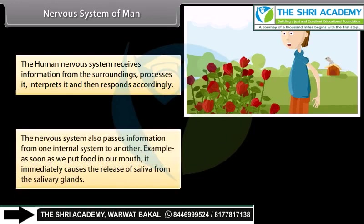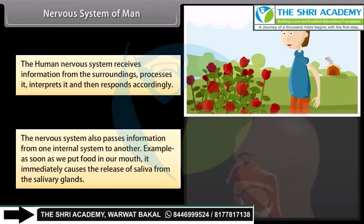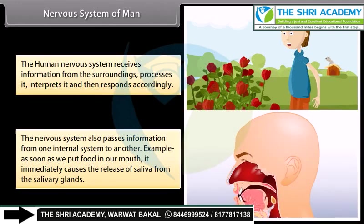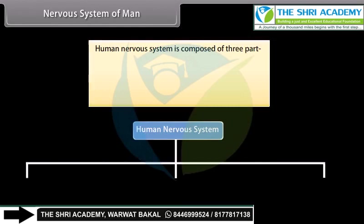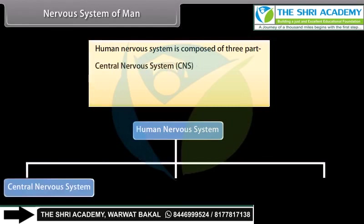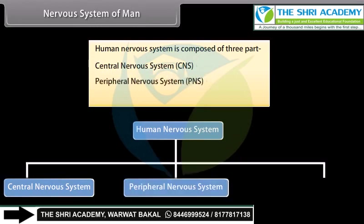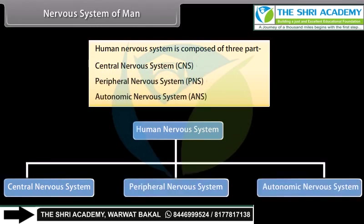The nervous system also passes information from one internal system to another. For example, as soon as we put food in our mouth, it immediately causes the release of saliva from the salivary gland. The human nervous system is composed of three parts: the central nervous system (CNS), the peripheral nervous system (PNS), and the autonomic nervous system (ANS).